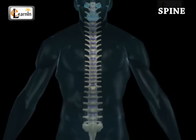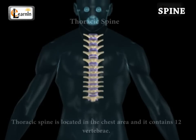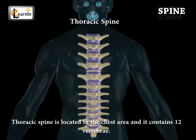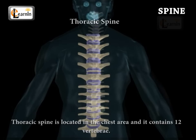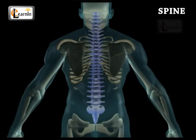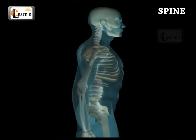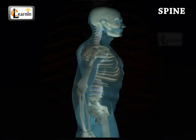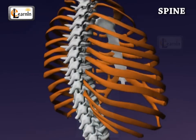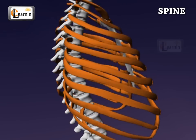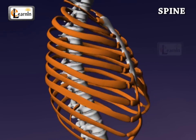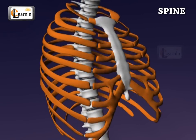The thoracic spine is located in the chest area and contains 12 vertebrae. These are connected to the rib, which limits the flexibility of these vertebrae. The ribs aid in the protection of many vital organs in the human body.